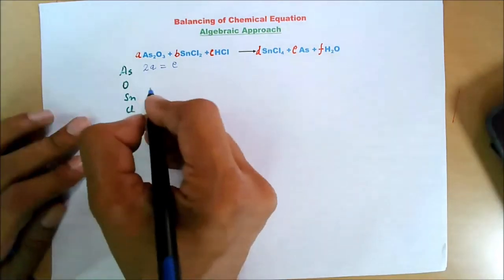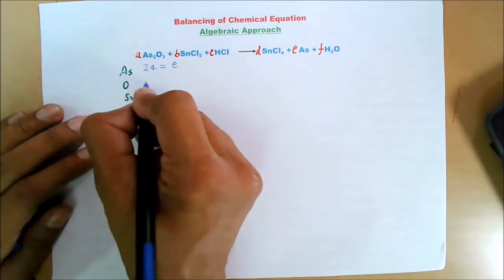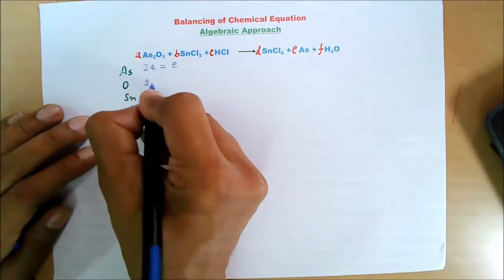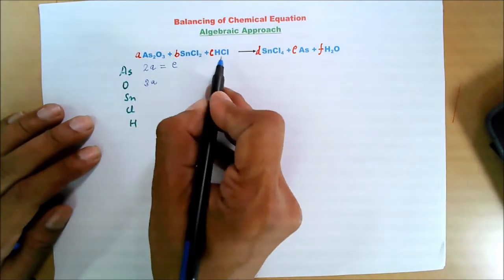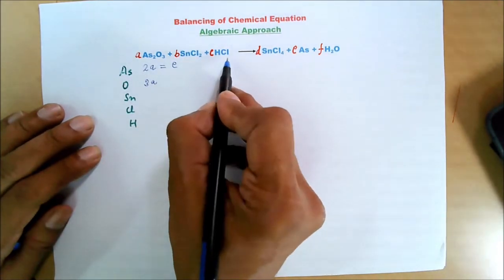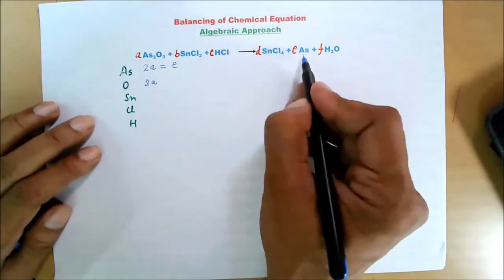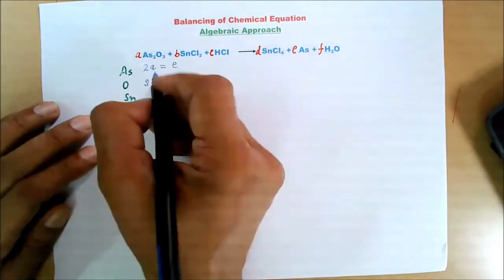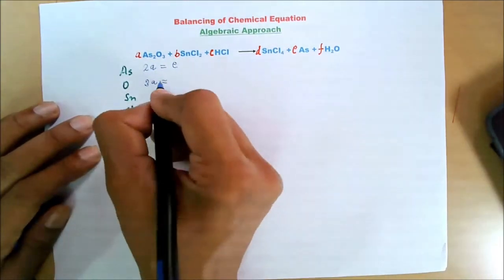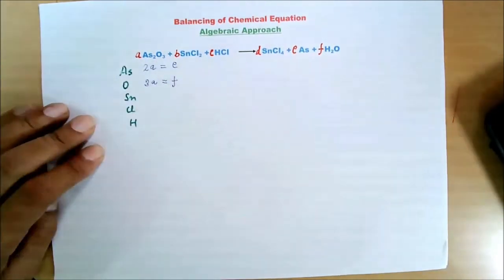For oxygen: there are three atoms of oxygen in arsenic trioxide, so I write 3A. Then checking where else oxygen is present — it is present in water. So 3A = F. That is my second equation.